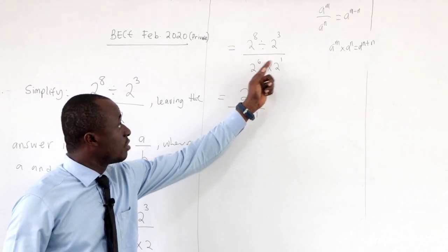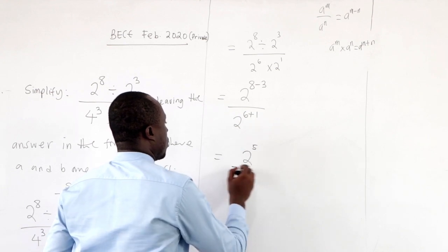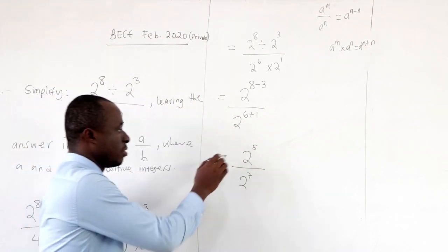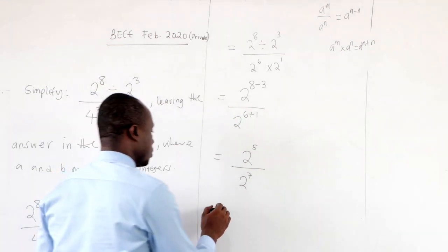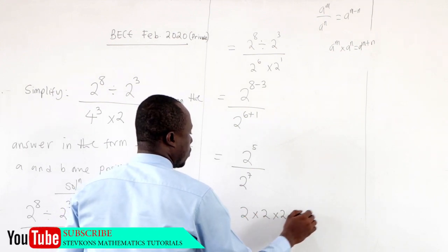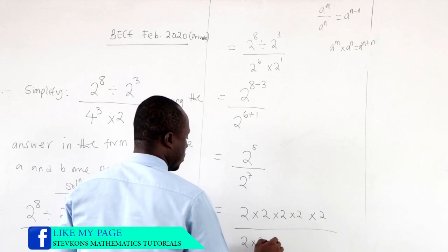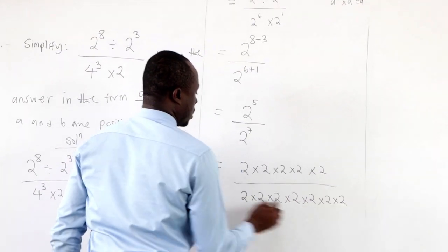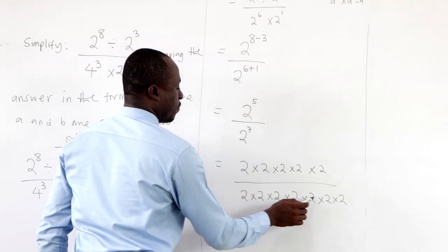This gives us 2 to the power 5 all over 2 to the power 7. Now, 2 to the power 5 means 2 multiplying itself 5 times: 2 × 2 × 2 × 2 × 2. In the denominator, 2 to the power 7 means 2 multiplying itself 7 times.